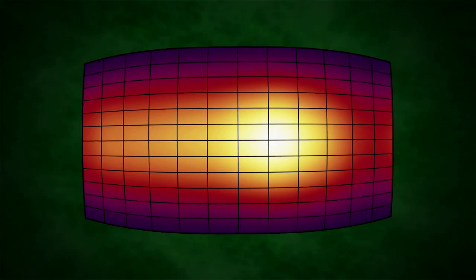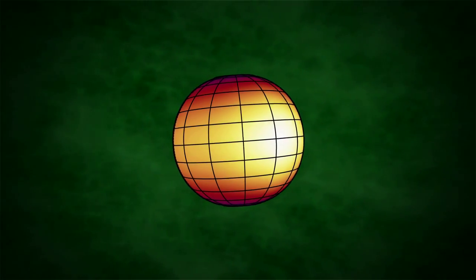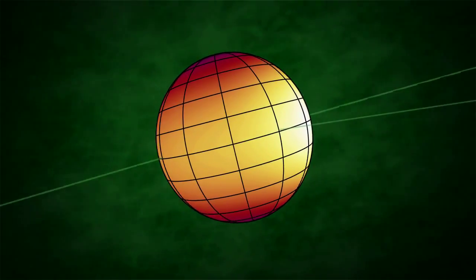Unlike Cyclops, where the hot spot sits directly under the baking heat of its sun, on Storm, it's shifted away by about 30 degrees.